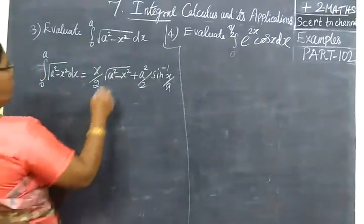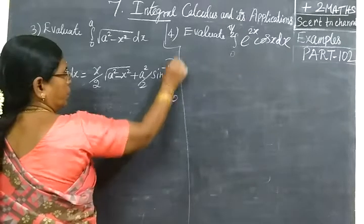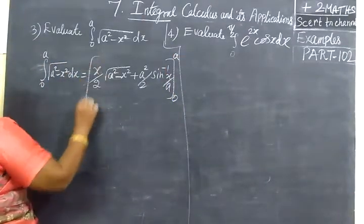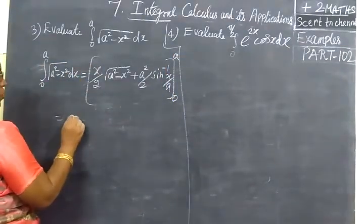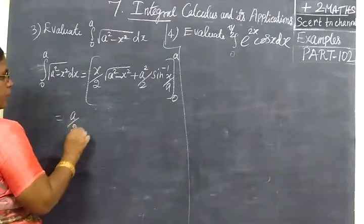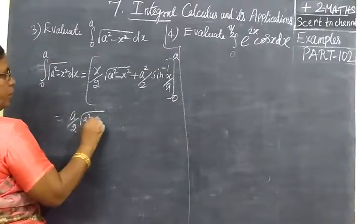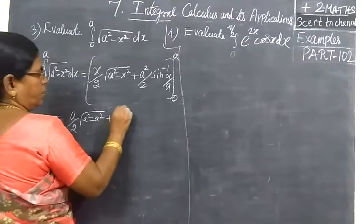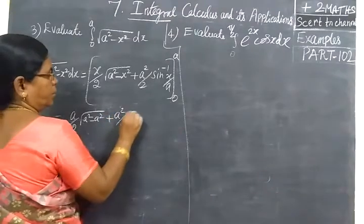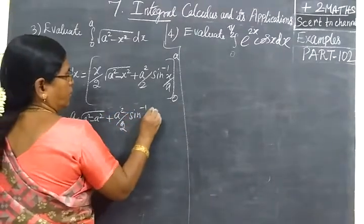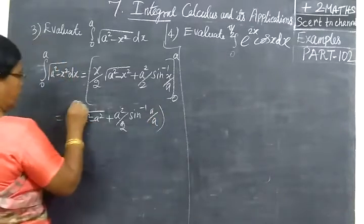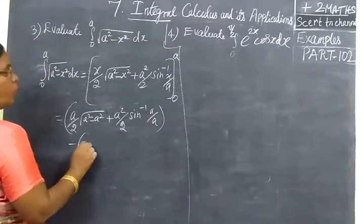Now here we have to apply the limit. So this is equal to wherever x comes you write a. So a/2 root of a² - a² plus a²/2 sin inverse a/a upper limit minus lower limit.